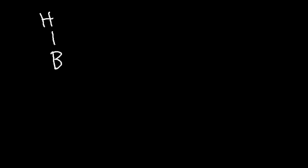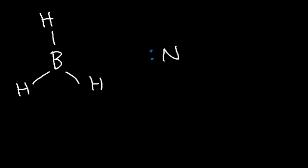A good example of a Lewis acid-base reaction is the one between BH3 and ammonia. The nitrogen atom in ammonia has eight electrons — a lone pair and three bonds — so nitrogen has no space to receive electrons, but it can donate a lone pair. Boron has an incomplete octet with only three bonds and six electrons, so it can accept a pair of electrons.